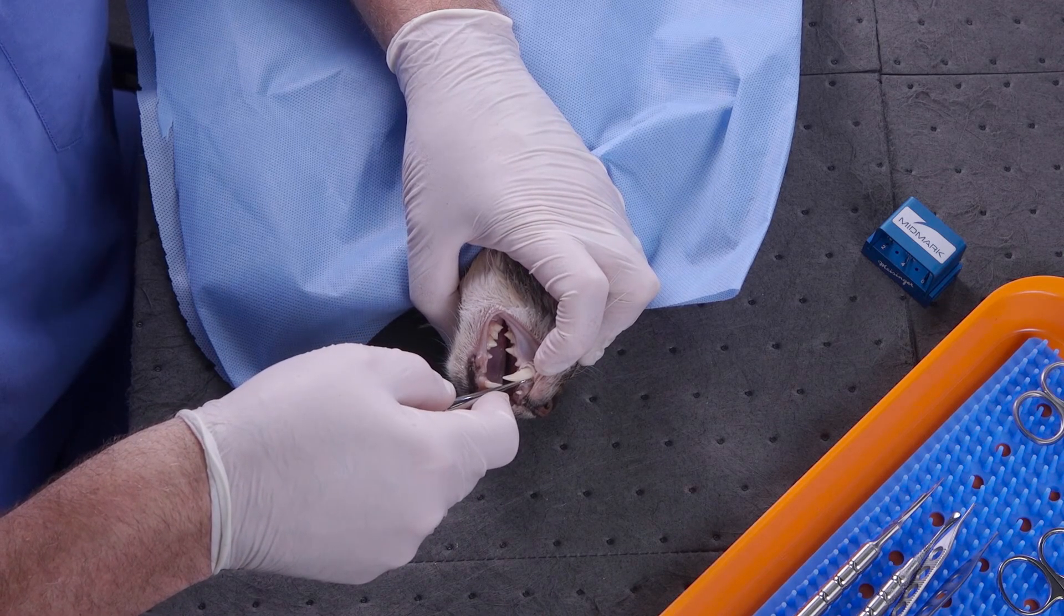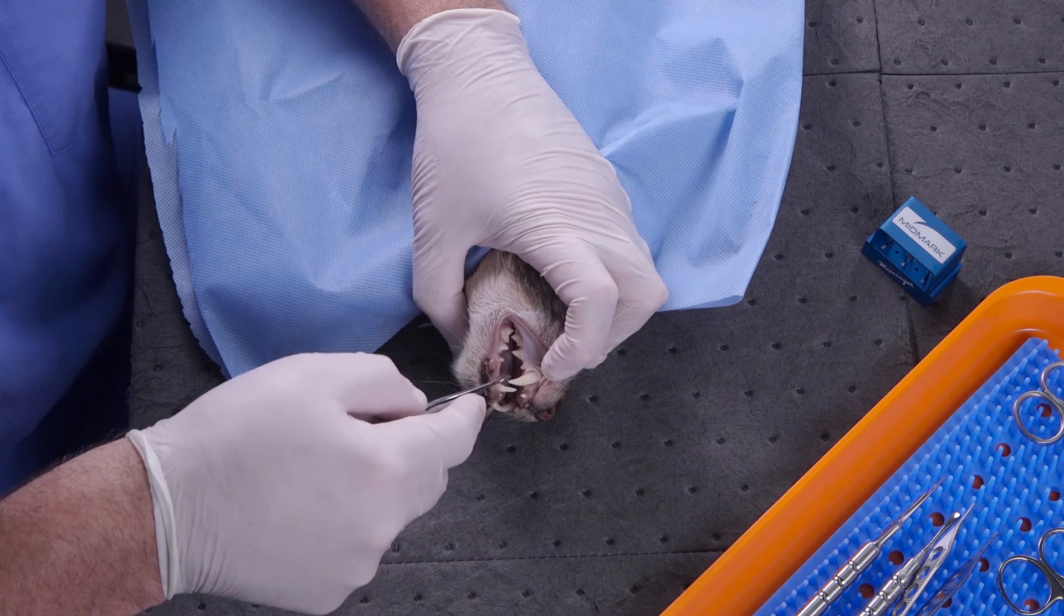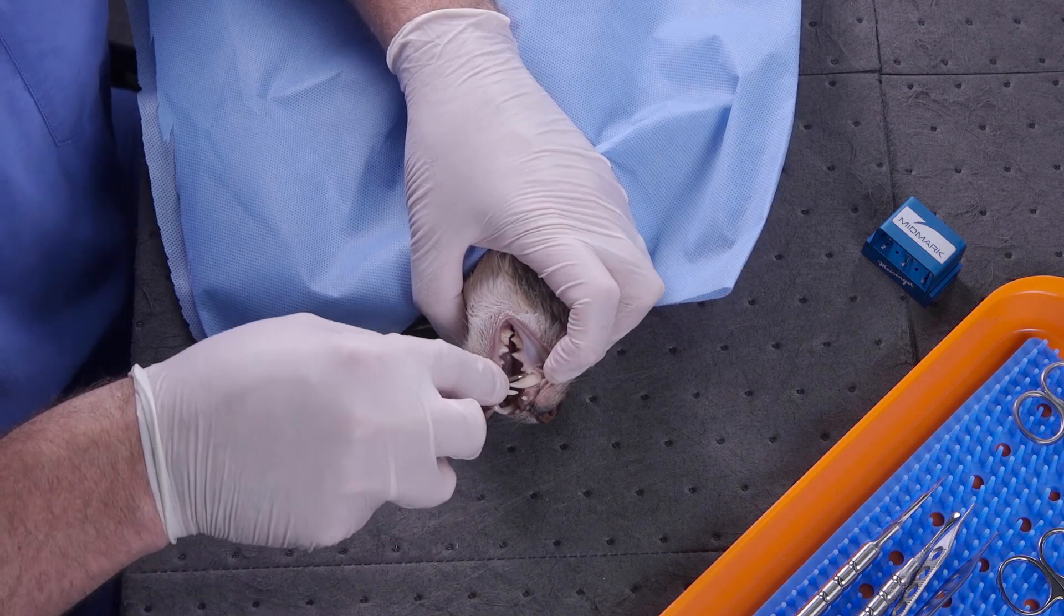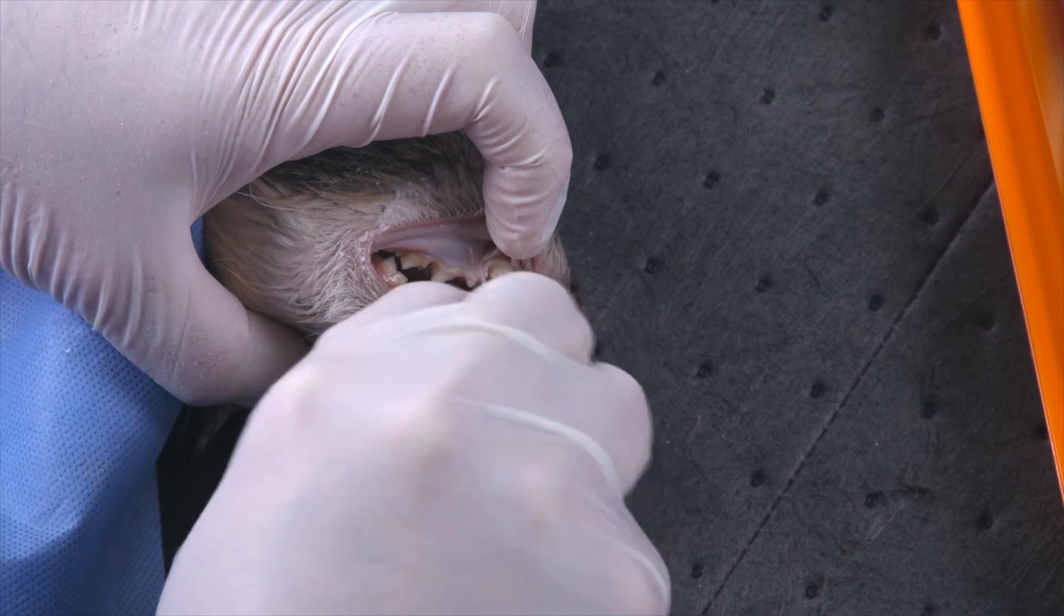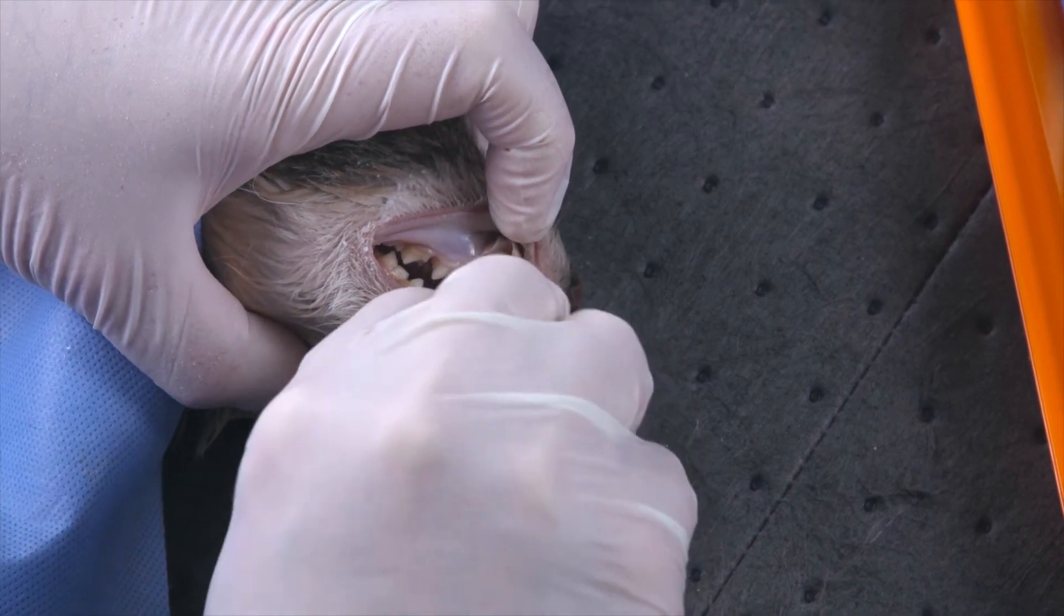When we get movement here on the mesial aspect of the tooth and get some penetration, then we can withdraw and go to the opposite circumference of the tooth, working down between the root and the bone on the distal aspect of the root.